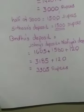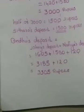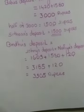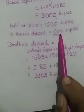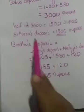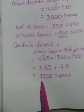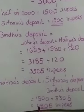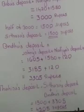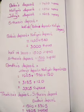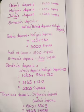Then we want to find the deposit of Tahira. Tahira's deposit is equal to the sum of the deposit of Sitara and Bindu. What is the deposit of Sitara? 1500. What is Bindu's deposit? 3305. Tahira's deposit equals Sitara's deposit plus Bindu's deposit. Add these two amounts and we get Tahira's amount as 4805 rupees. Now we have found Tahira's deposit. Write this question and answer in your notebook. And also listen to this question and answer once more.